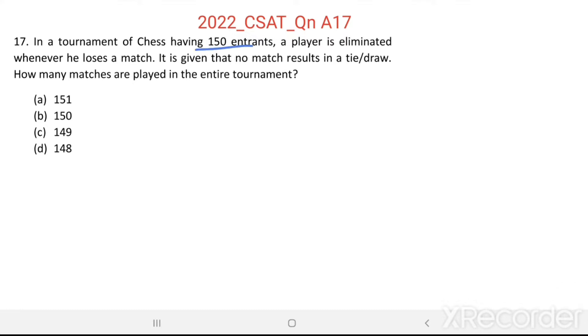There are 150 entrants in a chess tournament. A player is eliminated whenever he loses a match. There is no match results in a tie or draw. Then how many matches are played in the entire tournament?